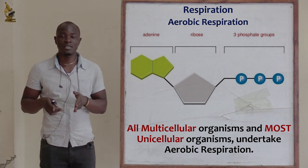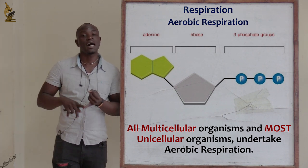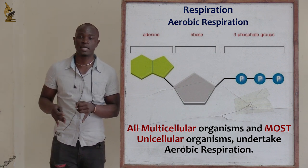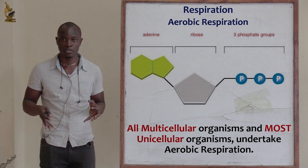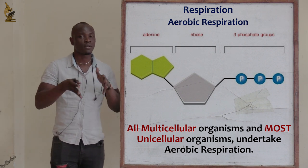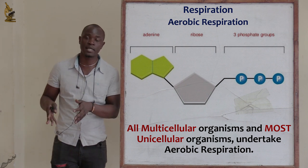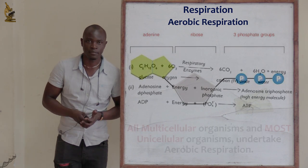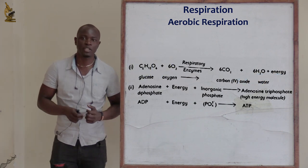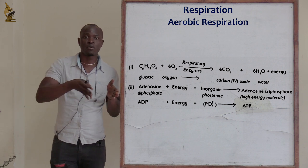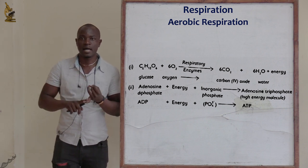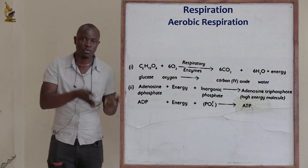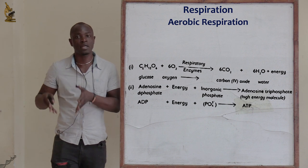We said most unicellular organisms, not all, because some bacteria are anaerobes — meaning they do not use oxygen, and if oxygen is provided they will die or be poisoned. So most unicellular organisms respire aerobically, while some respire anaerobically. In anaerobic respiration, glucose is not fully broken down to carbon dioxide, water, and energy.